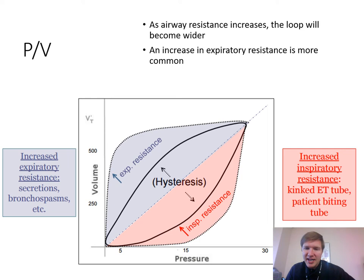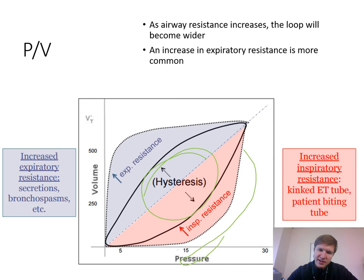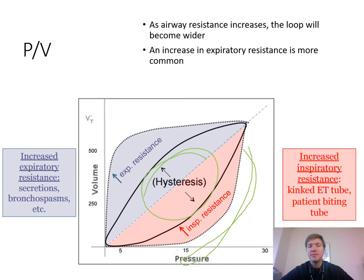As airway resistance increases, the PV loop will become wider — this is known as hysteresis. If it's inspiratory resistance — a kink in the tube, patient biting the tube, secretions — the loop widens on the inspiratory side. If it's on the expiratory side, it could be secretions, bronchospasm, or a gunked-up expiratory filter, especially if you've been nebulizing things through the circuit. Check those expiratory filters.